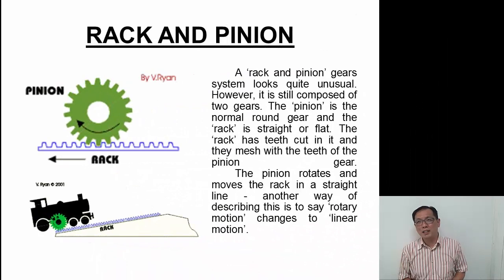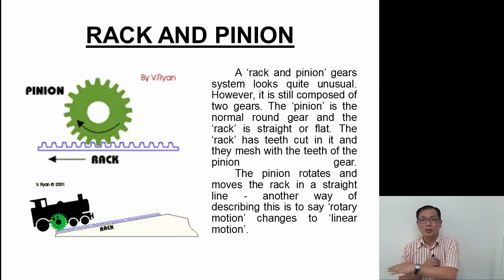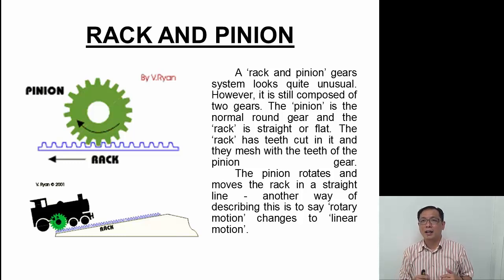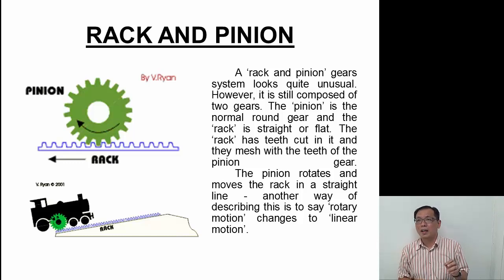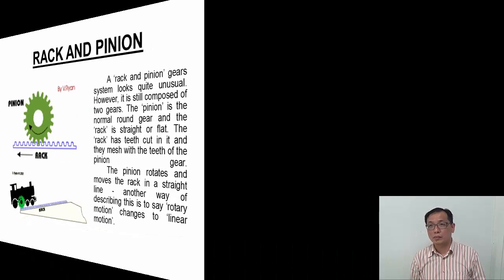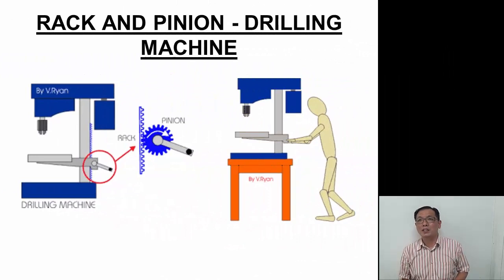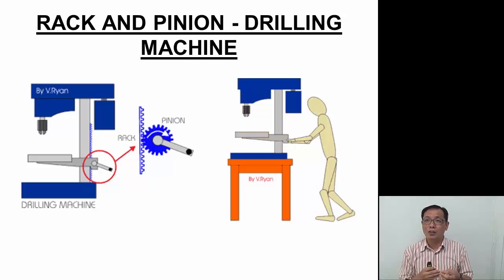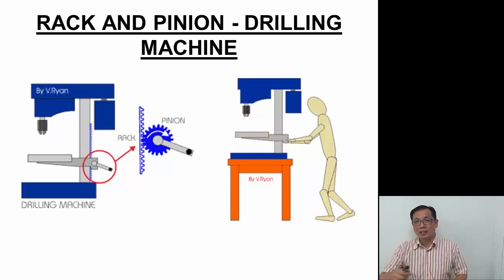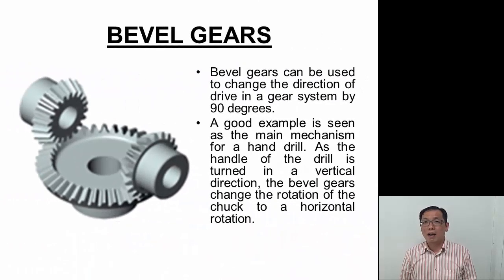Another form of gear is the rack and pinion. The rack is the one on the bottom and moves horizontally in a linear way when the gear — called the pinion — rotates. This converts rotary motion to linear motion. Rack and pinion is used in the drilling machine; next time you come to the workshop, look for where the rack and pinion moves the table up and down as you turn the crank handle.